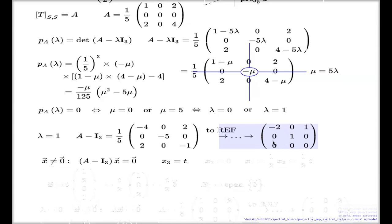If I parametrize the third unknown as t, my second unknown from the second row becomes 0, and the first unknown from the first row, if you solve for x₁, it will be one half of x₃. Because x₃ is t, it's one half of t. If you combine your solution into vector form, that will be t times one half, zero, and one.